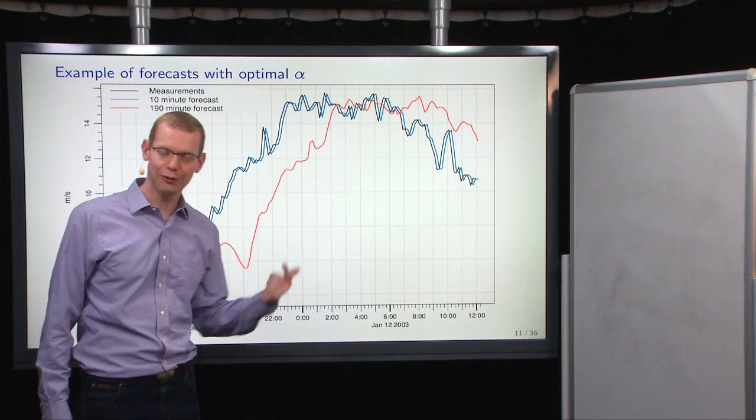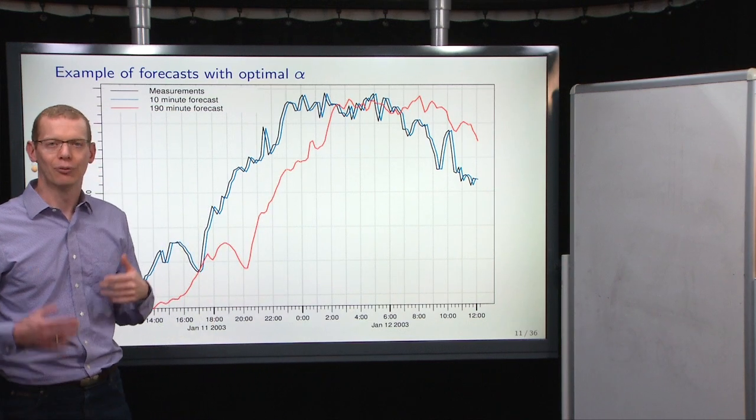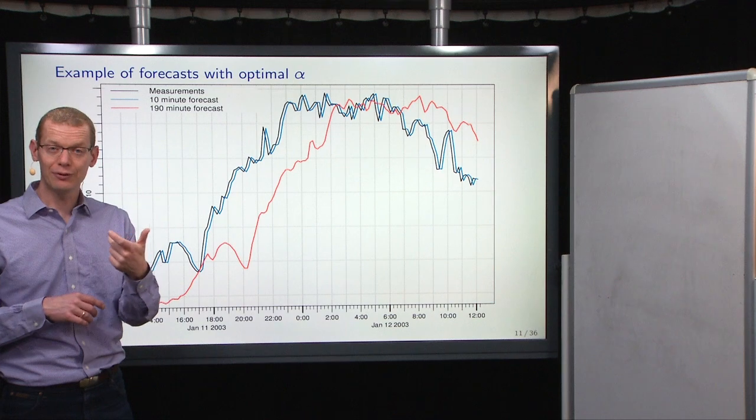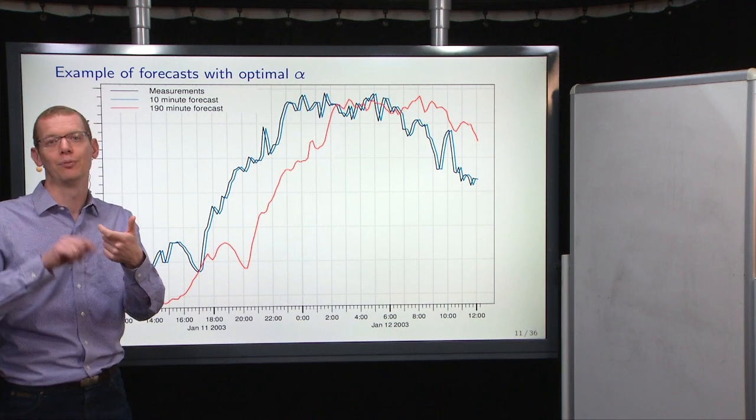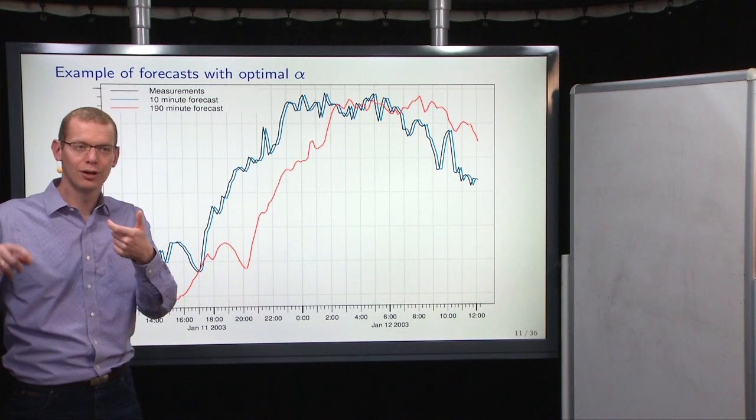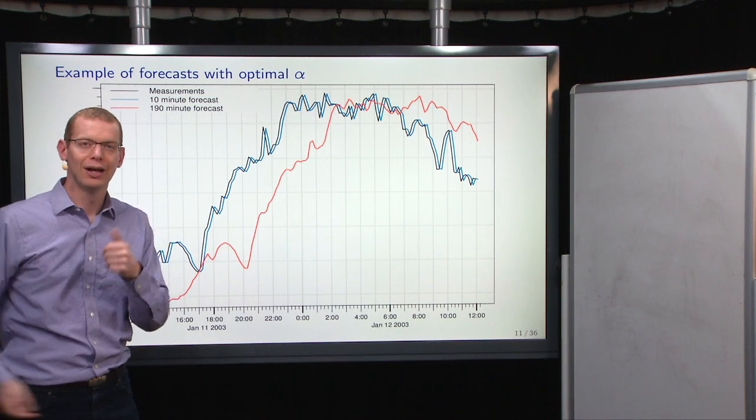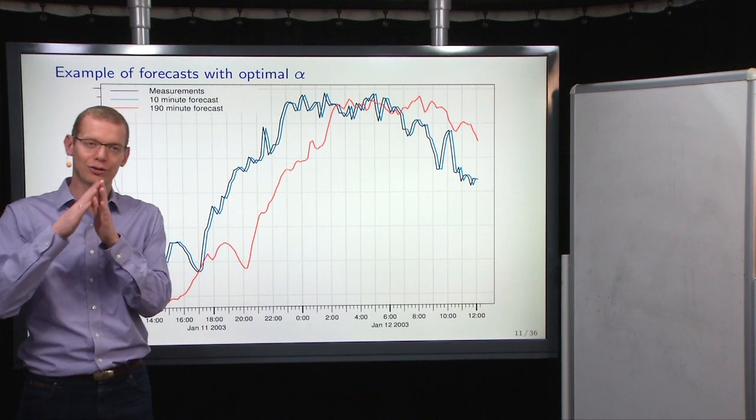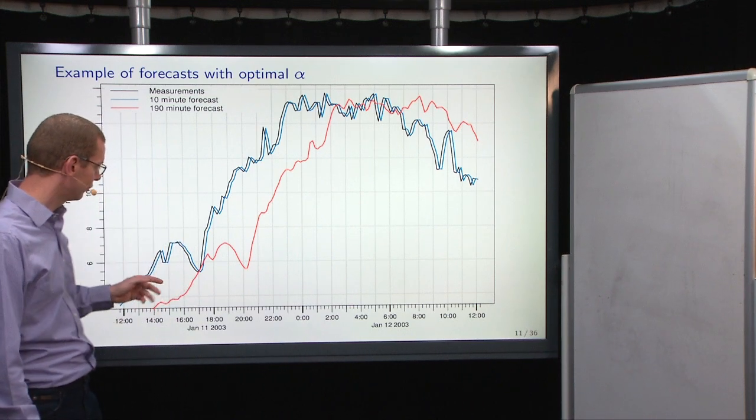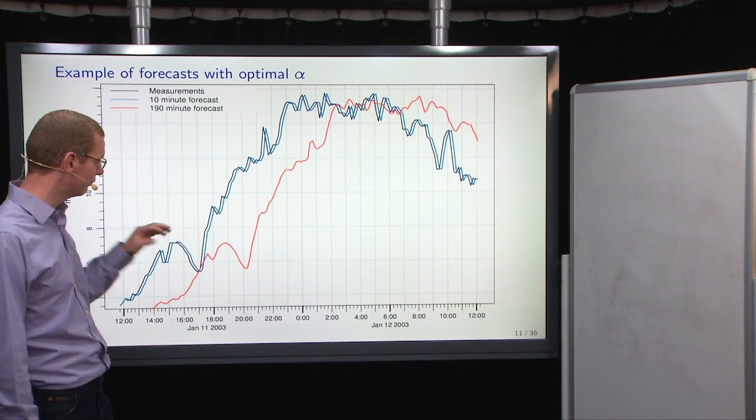But now, we use an alpha of 0.5, which means you have 0.5 weight on the most recent, 0.5 squared on the one before, cubed to the fourth power, and so forth. And we know that that series goes very quickly to 0. So the weight on very old observations is very, very small.